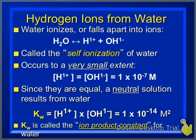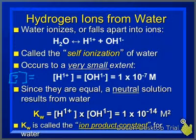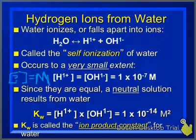Molarity is moles per liter. Whenever we see brackets with something inside, it means we are dealing with concentration measured in molarity. Molarity tells you how strong a solution is: a small number means it's weak and diluted, a large number means it's strong. For example, a 12 M HCl solution is very strong, while a 0.1 M HCl solution is very diluted.